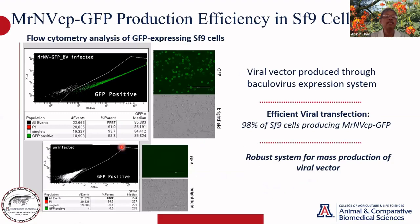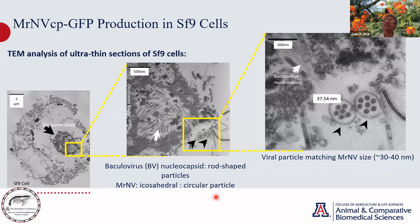When we first infected SF9 cells with this recombinant virus, the cells were glowing heavily — almost 91 to close to 100% of cells were infected. That's not surprising since baculovirus is well known to infect insect cells. The payload — in this case GFP — is heavily expressed. And if we perform TEM, transmission electron microscopy of the SF9 cells, we should see two types of viruses: baculovirus, which are more rod-shaped or elongated particles, and MRNV, which are more icosahedral particles within a vesicle.